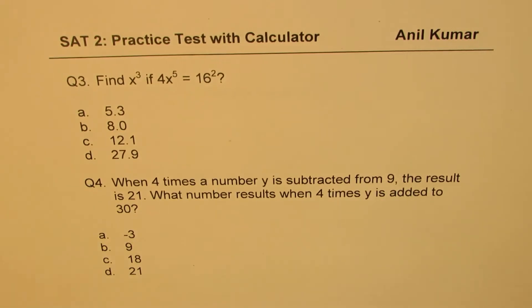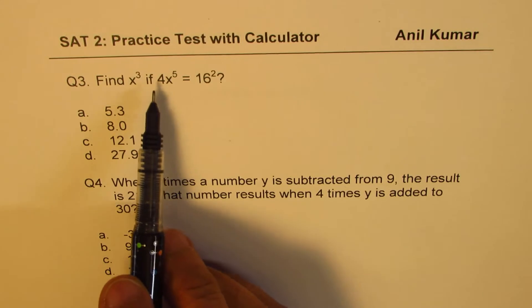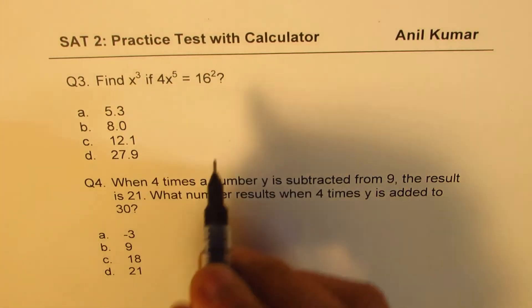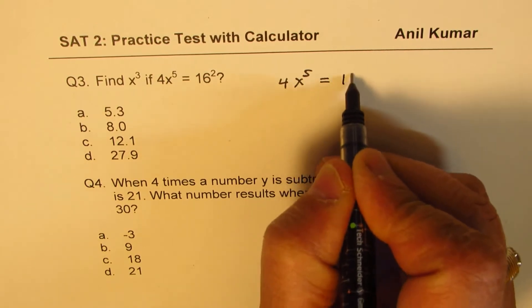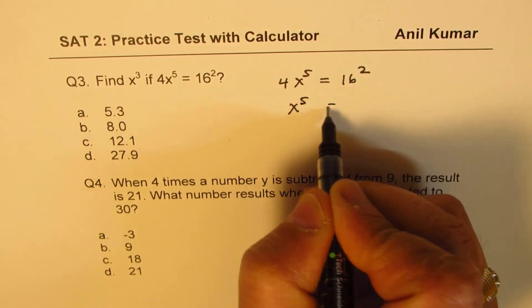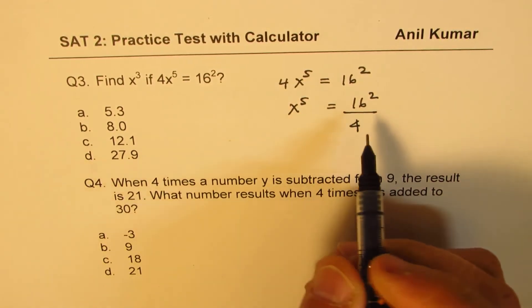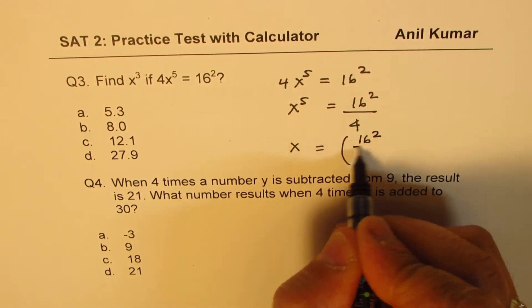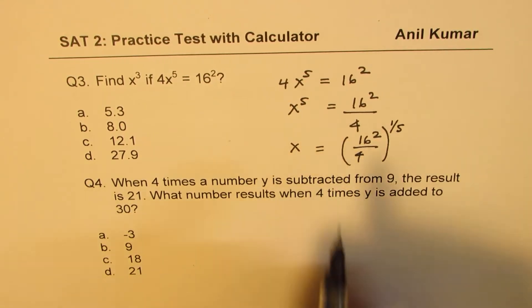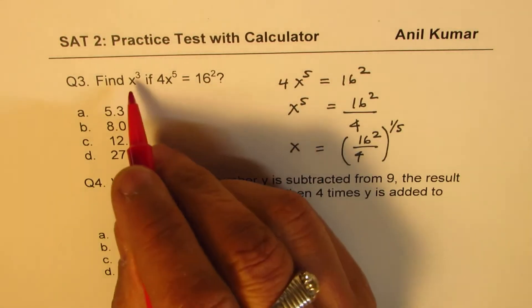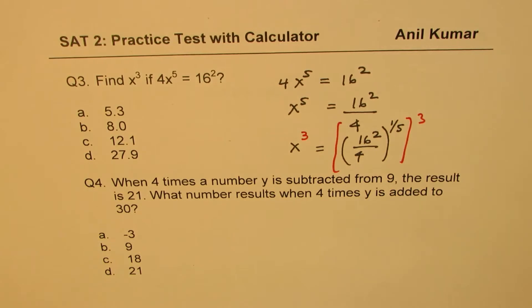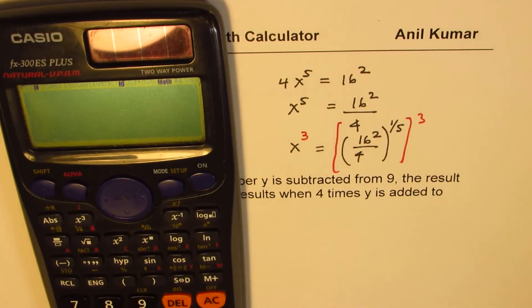Question 3: find x cubed if 4x to the power of 5 equals 16x squared. We can simplify: x to the power of 5 equals 16x squared divided by 4. So x equals (16x squared divided by 4) to the power of 1 over 5. Then to find the cube, raise everything to the power of 3. Use your calculator, starting from inside out — that's probably the fastest approach.